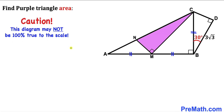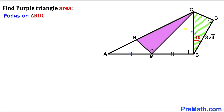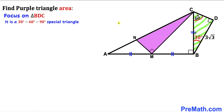Please keep in mind that this figure may not be 100% true to scale. Let's get started. I'm going to share two different approaches, so please watch till the very end. Here's our first step: let's focus on right triangle BDC. We can see that this angle is 30 degrees, this angle is 90 degrees, so therefore this angle has got to be 60 degrees — making this a special 30-60-90 degree triangle.